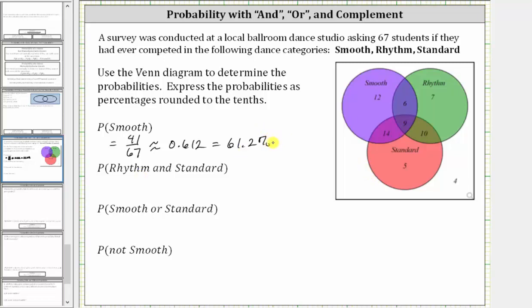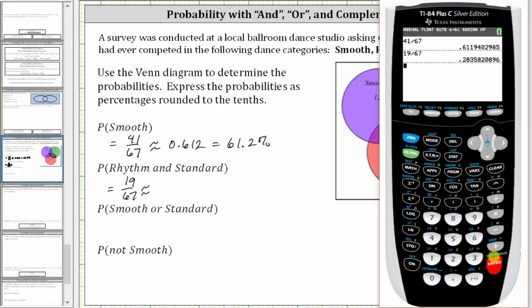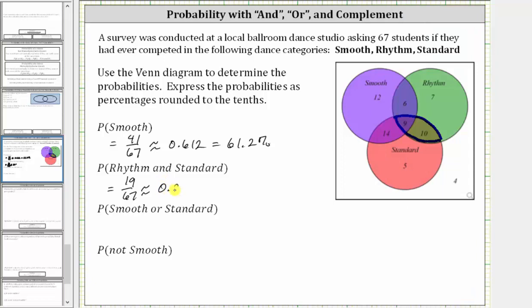Next, we're asked to find the probability a student competed in rhythm and standard. We find the students that competed in rhythm and standard in the intersection of the rhythm and standard sets. Looking at the Venn diagram, here we have the rhythm set, here we have the standard set, and the intersection of the two sets is this region here. Notice 9 plus 10 are 19 out of 67 students competed in rhythm and standard. The probability of rhythm and standard is 19/67, which to three decimal places is approximately 0.284, which is 28.4%.